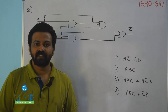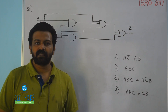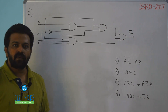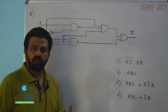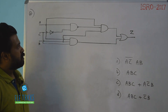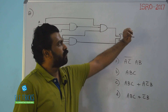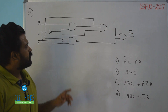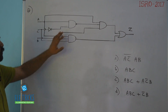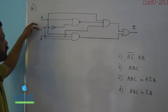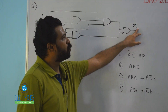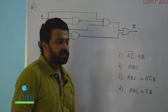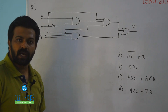Hi everyone, welcome to Electrics. In the last video I discussed Shannon's expansion and a problem based on that concept. Today, as a continuation, I'd like to do one more example. This particular question is from the ISRO 2017 exam for electronics engineering. The question gives a logic circuit with inputs A, B, and C, and we need to find the output expression Z from four given options.